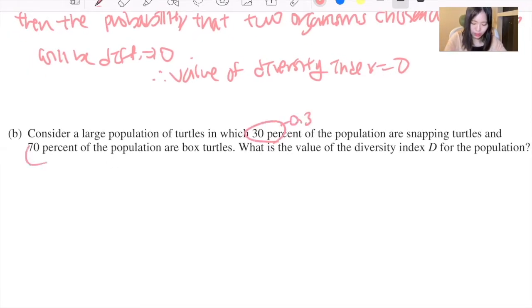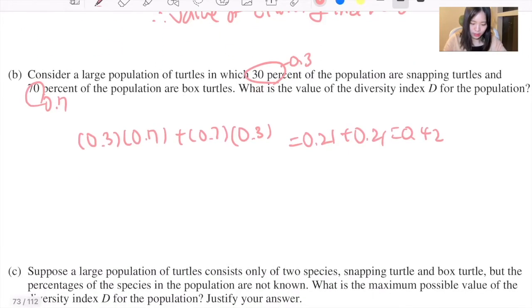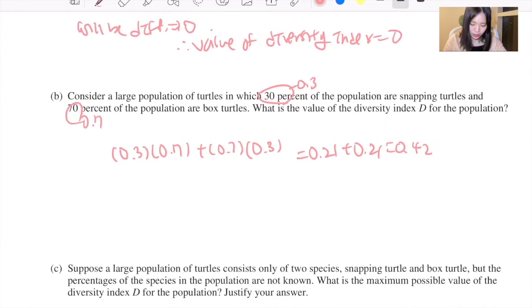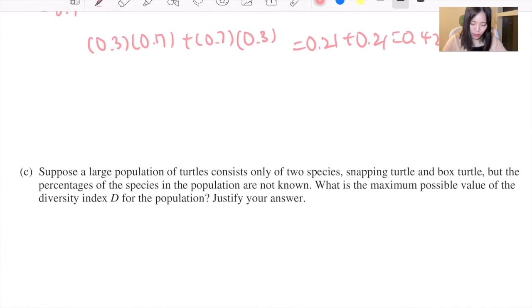So the probability would be 0.3 times 0.7 plus 0.7 times 0.3 equals 0.21 plus 0.21, so 0.42. And you can say that the independence of the species for the two turtles is justified by the random selection from a large population. So just write something about the independence, because it's from a random selection.